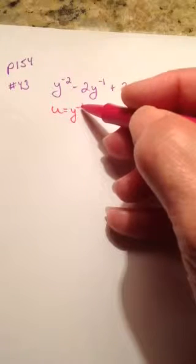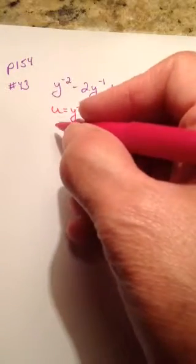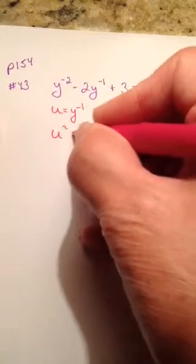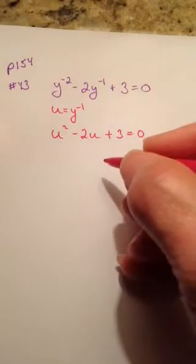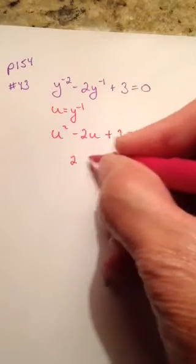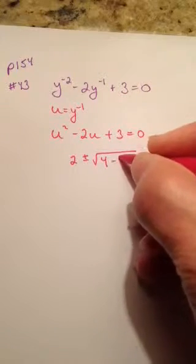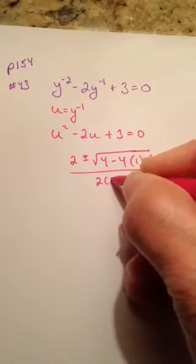Notice that y to the negative 1 squared is going to give me y to the negative 2, because you multiply your exponents. So on the outside, I'm going to have u squared minus 2u plus 3 equals 0. This does not factor, so I'm left with the quadratic formula. Using the quadratic formula, I have opposite of b, so 2 plus or minus b squared minus 4ac, all over 2a.